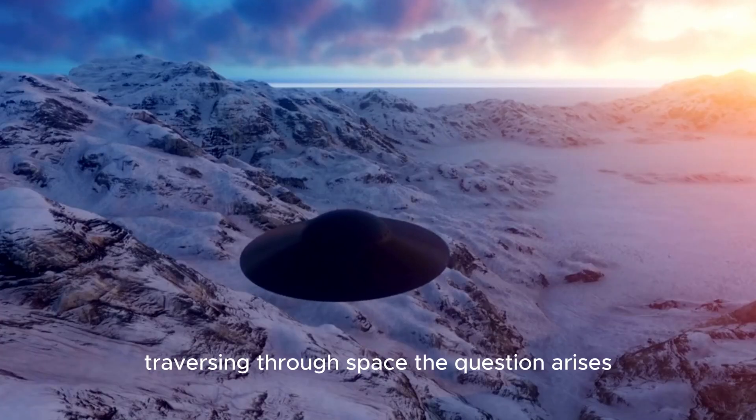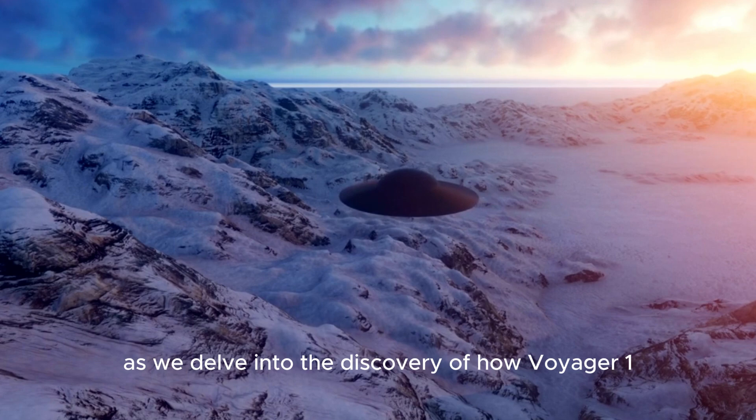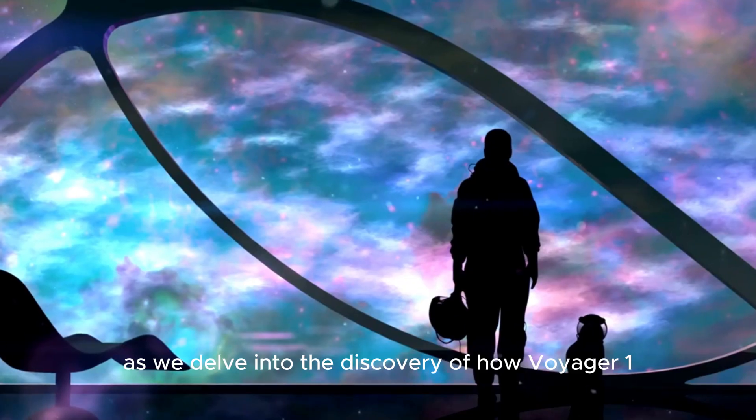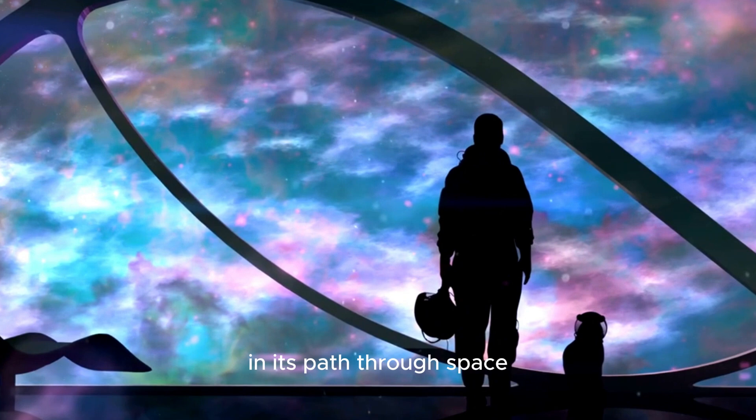The question arises, what are these unidentified flying objects? Join us as we delve into the discovery of how Voyager 1 identified 300 mysterious objects in its path through space.